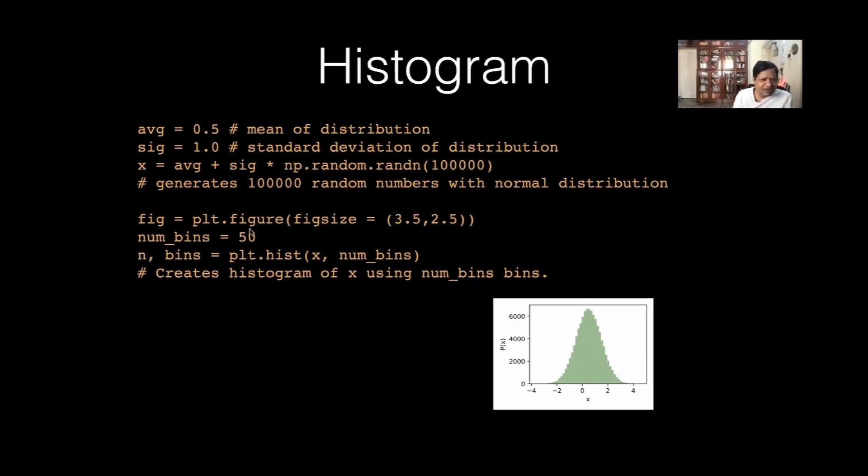Now, we create this fixed size, fixed object. Number of bins I choose is 50. So, it will generate these numbers and now the code itself will decide what should be the, I mean, it takes the minimum and maximum and makes the bins. Okay.